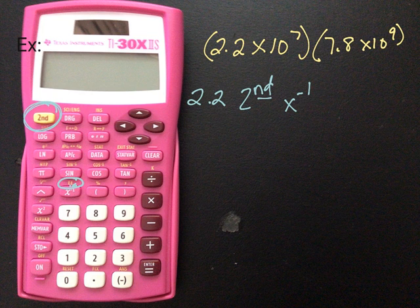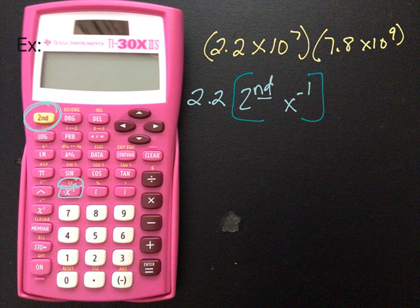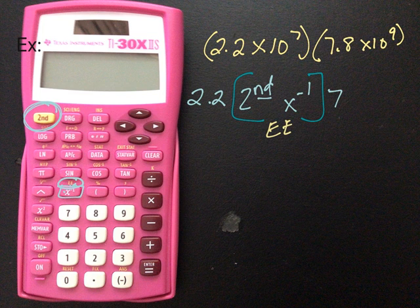So what you're going to do is you're going to type it, and I'm going to write down what you would type in. Okay, so you would type in 2.2 second, that's this button up here, and then X to the negative first because you need the EE. Since the EE is yellow, you would hit second first, and then this button, and it gives you the EE. Okay, so when you type in this, it will give you EE, and then you get, what's my exponent? 7. Okay, so that gives, when you type that in, that basically says 2.2 times 10 to the 7th.